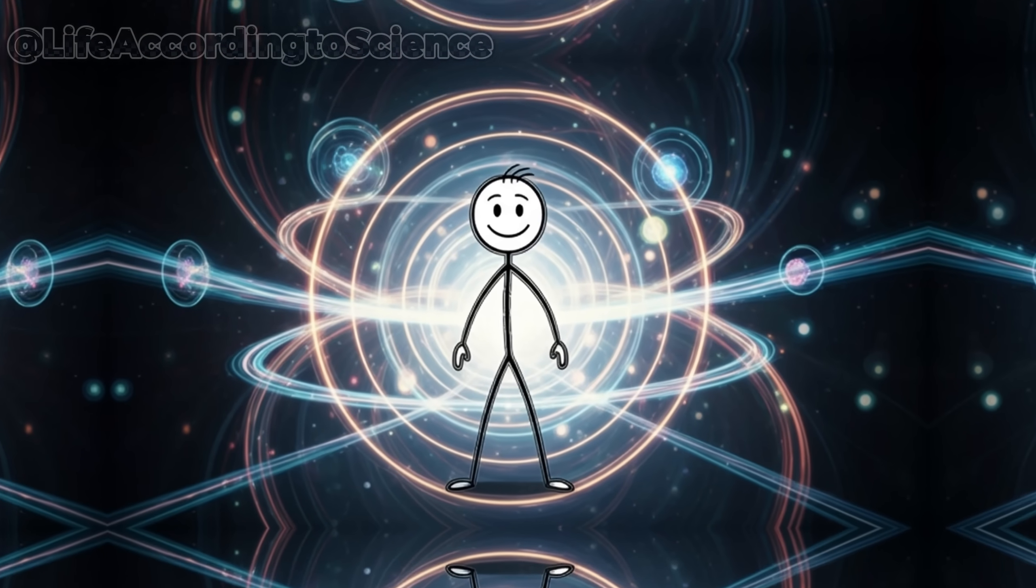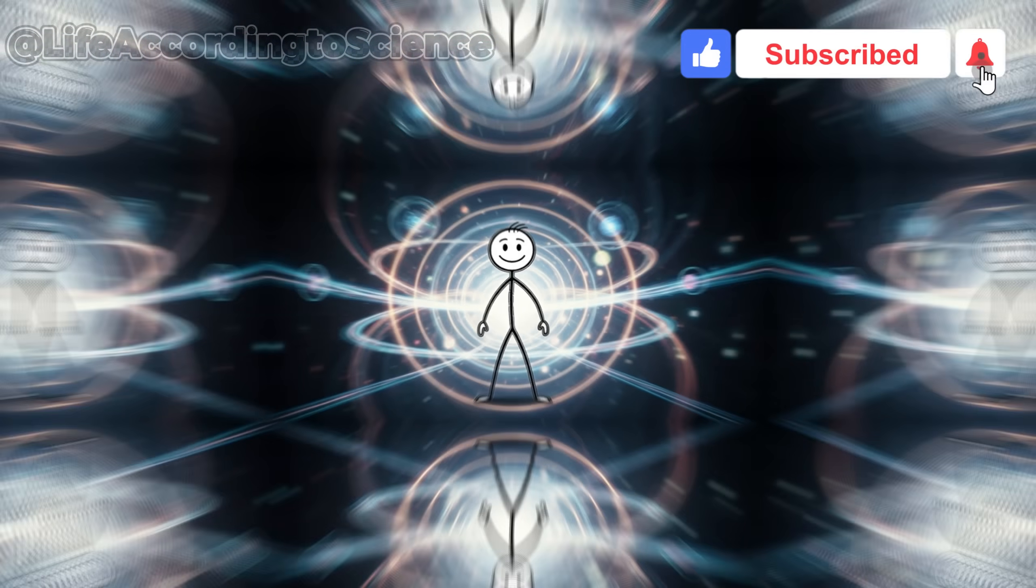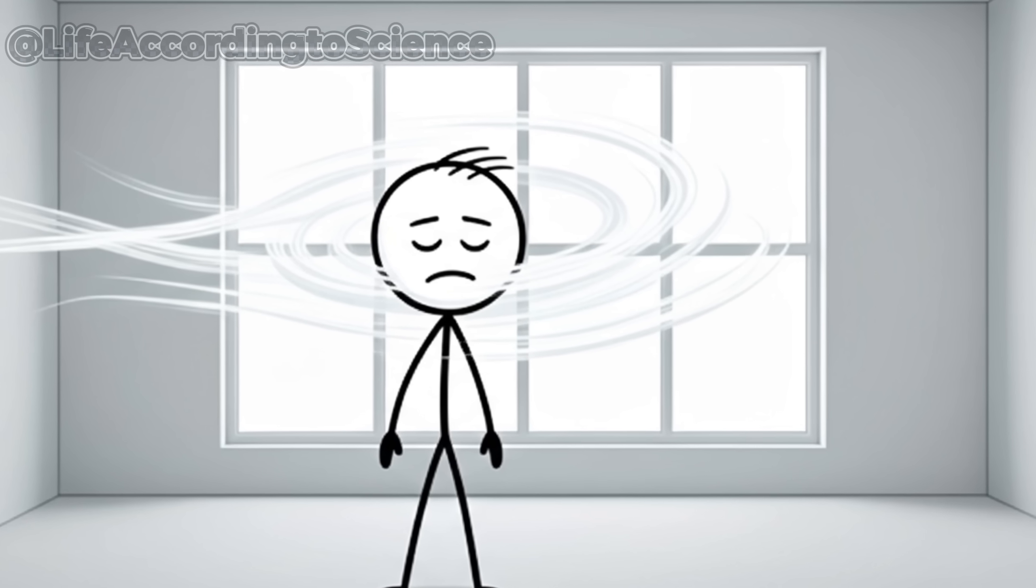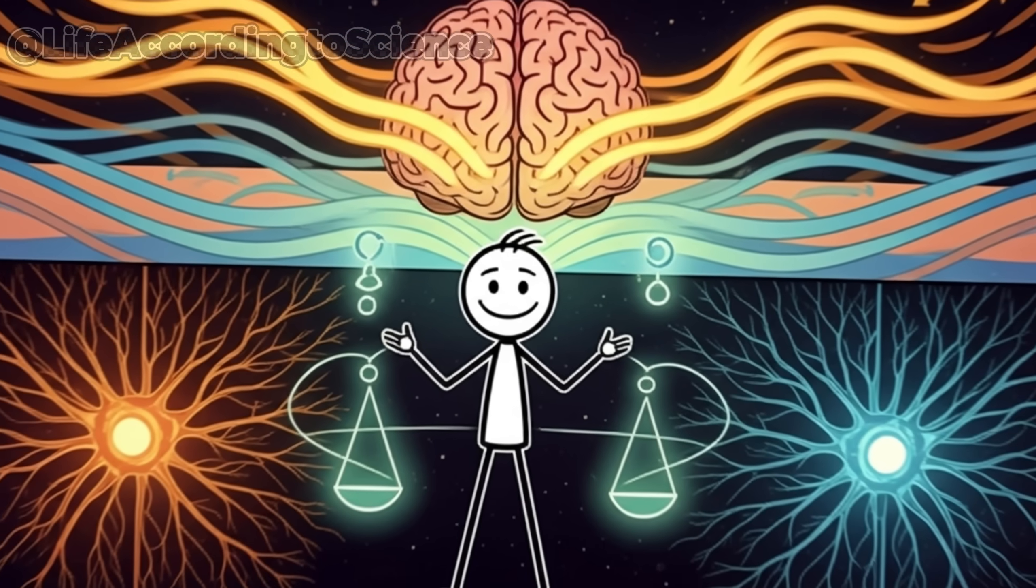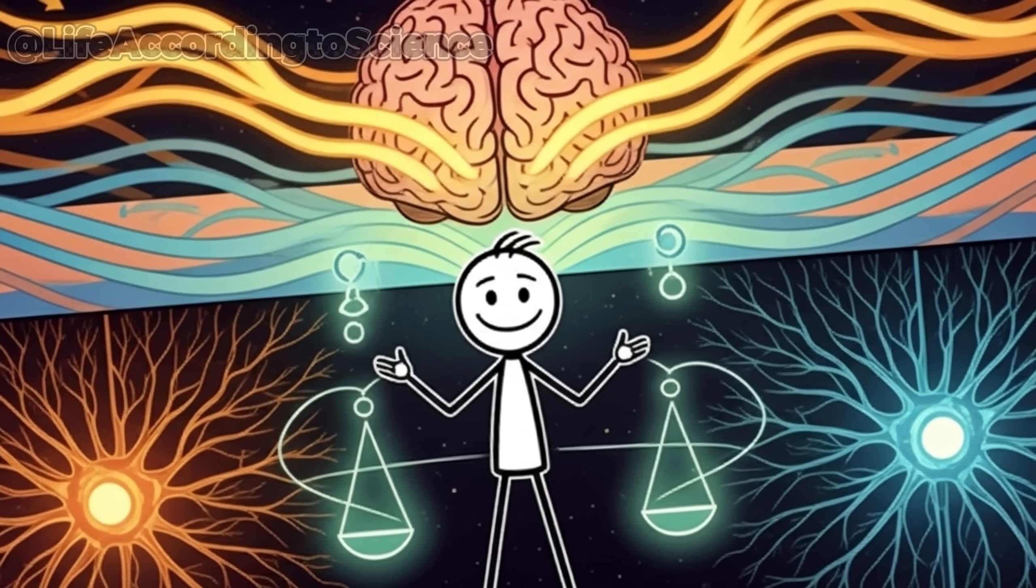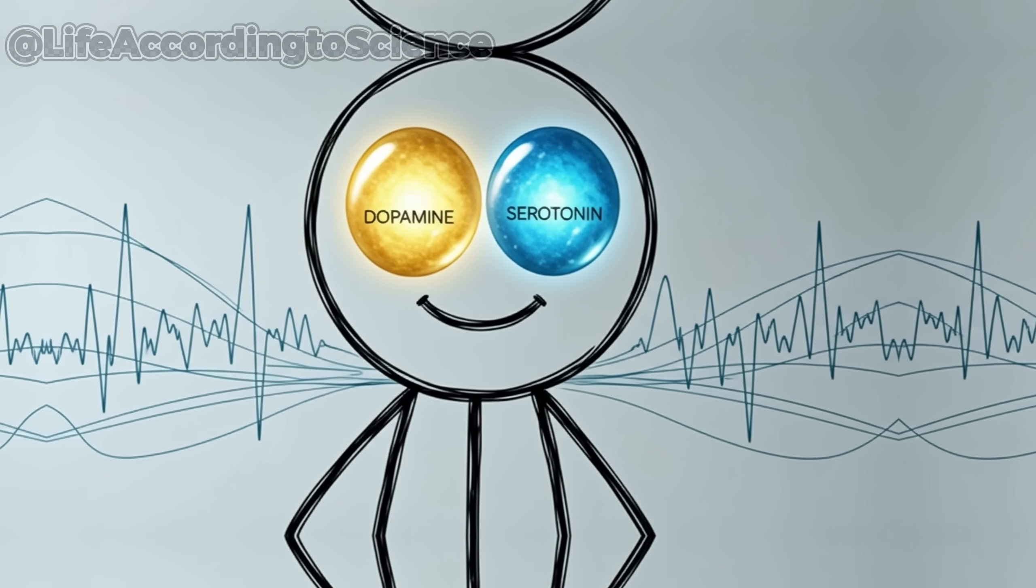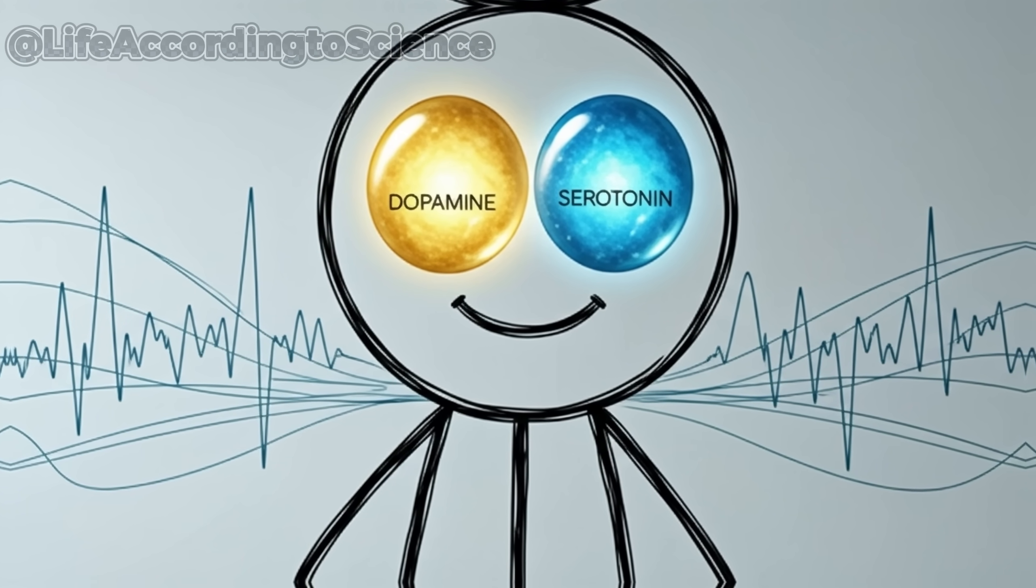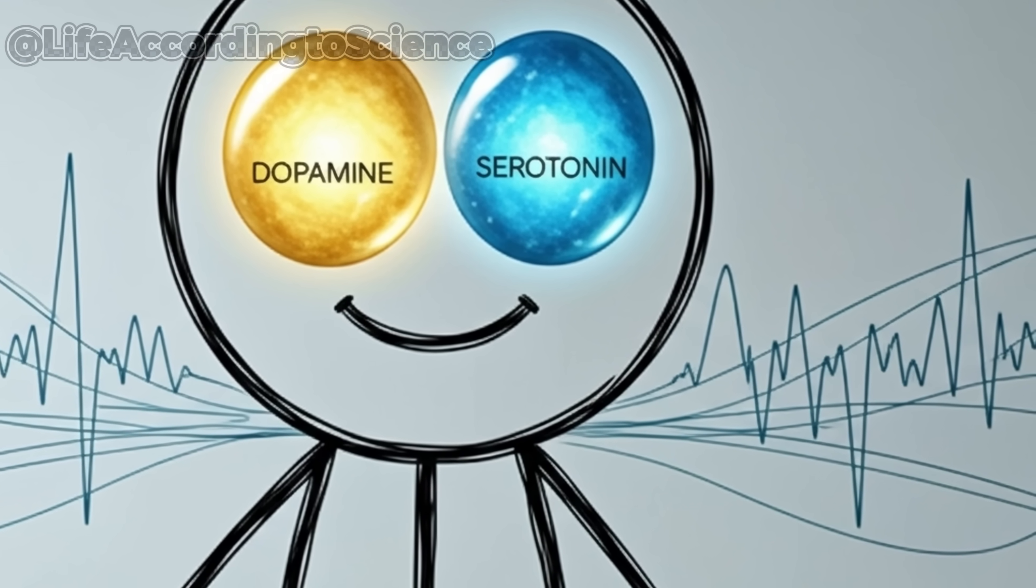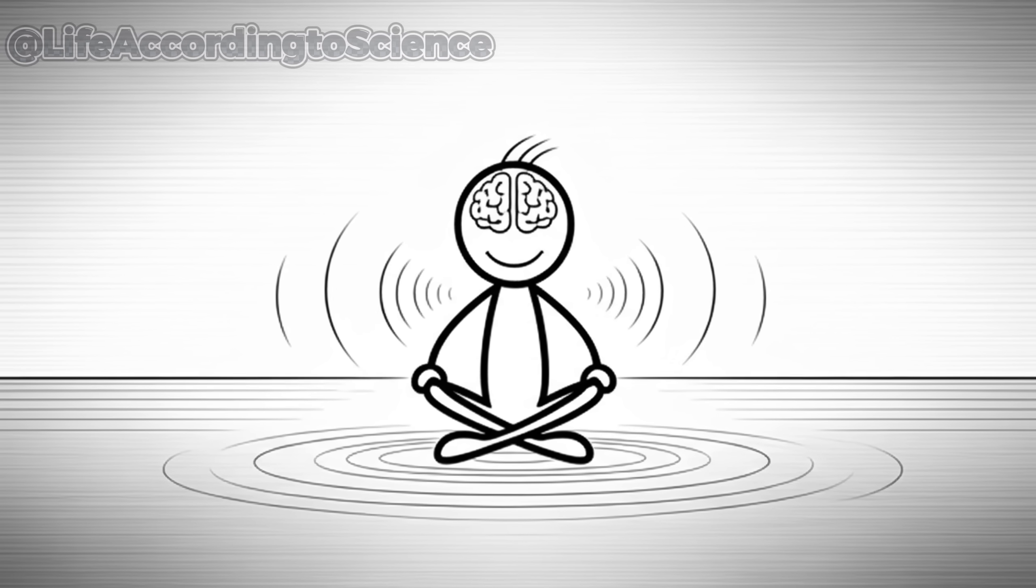By now, your body is fully immersed in its fasting rhythm. Something fascinating begins to happen. Mental clarity rises. The world seems quieter. Your focus deepens, and distractions lose their grip. Scientists believe this is partly due to the stable fuel supply from ketones, but there's more. Your neurotransmitters are recalibrating. Dopamine and serotonin, the chemicals responsible for motivation and mood, begin to stabilize. Without the constant spikes and drops caused by food intake, your emotional baseline evens out. That feeling of clarity isn't imaginary. It's biochemical balance.